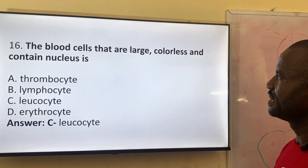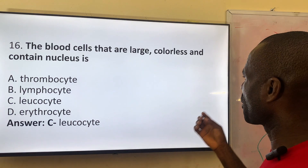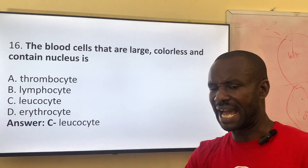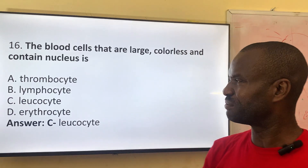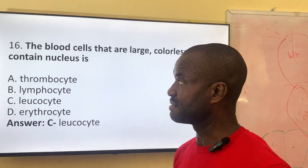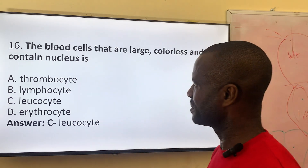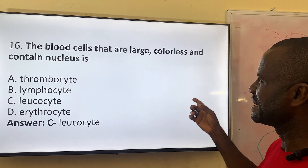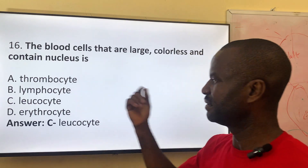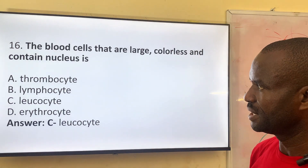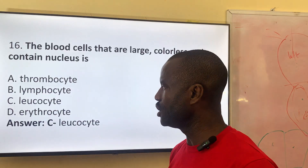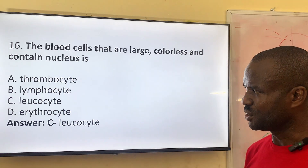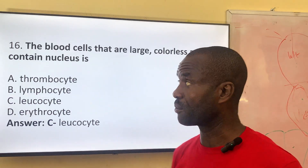Question sixteen: the blood cells that are large, colorless, and contain a nucleus. Some of these questions are similar — they use different language but appear in different years, so it's a kind of repetition. The blood cells that are large, colorless, and contain a nucleus. Option A: thrombocytes. Option B: lymphocytes. Option C: leukocytes. Option D: erythrocytes. The answer is leukocytes — leukocytes simply means the white blood cells, another term for white blood cells.